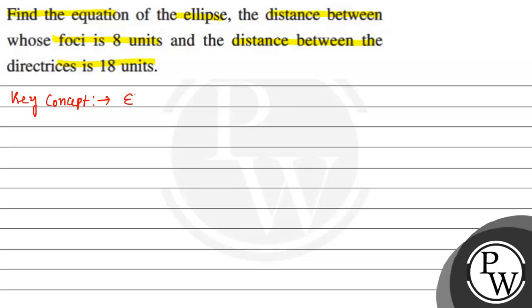Key concept: Equation of the ellipse. The equation of the ellipse is x²/a² + y²/b² = 1.